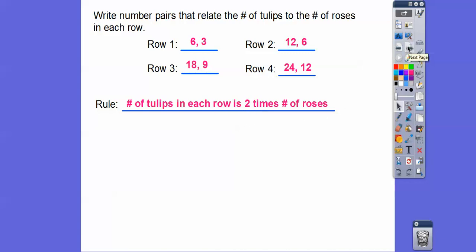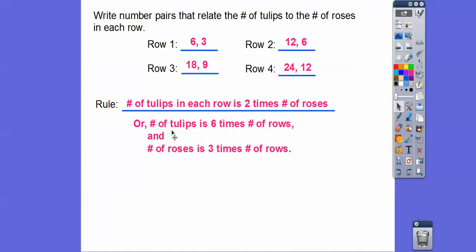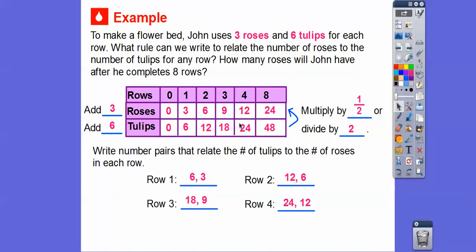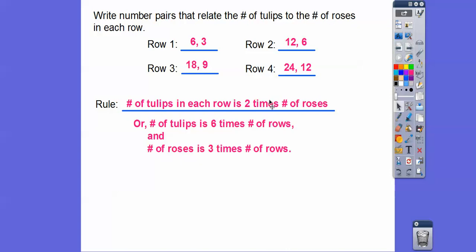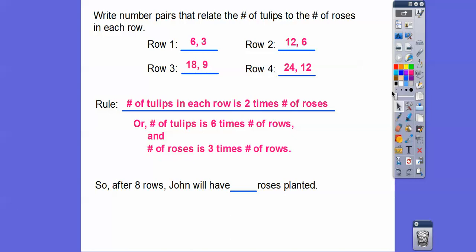Here's a better method for getting all the way to row eight. The number of tulips is six times the number of rows, and the number of roses is three times the number of rows — notice tulips are twice the roses here too. So after eight rows, John will have three times eight roses planted. Three times eight is 24. I hope that makes sense — take care!